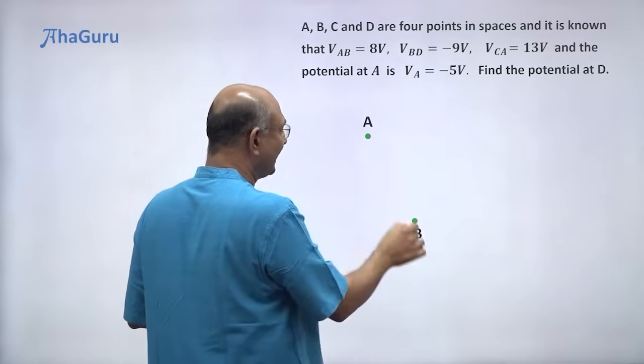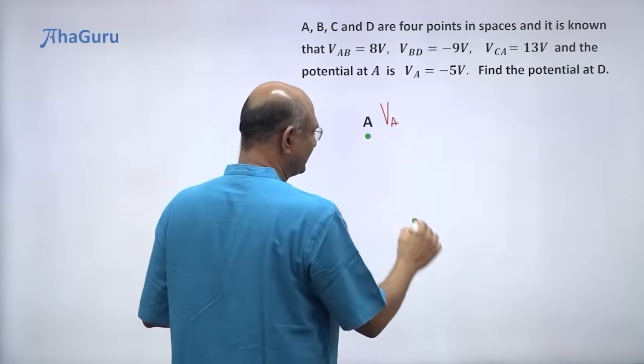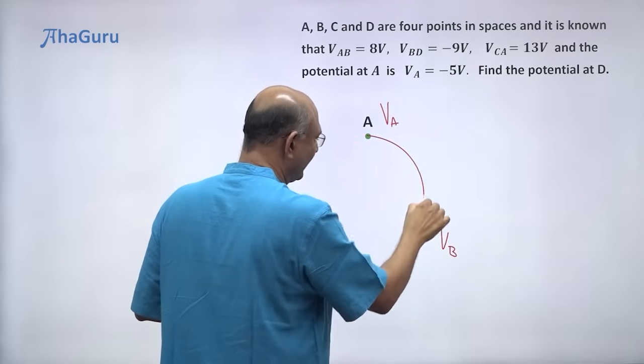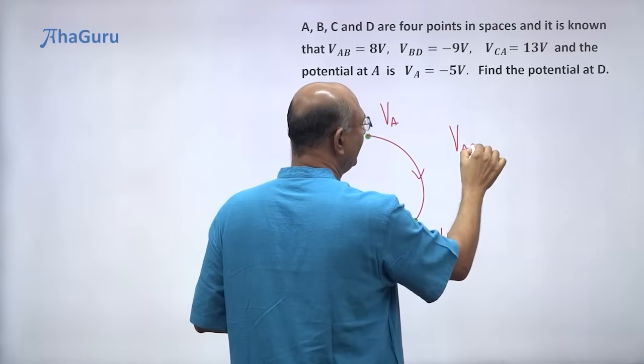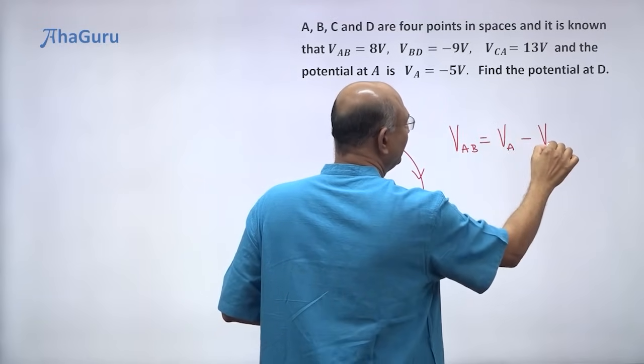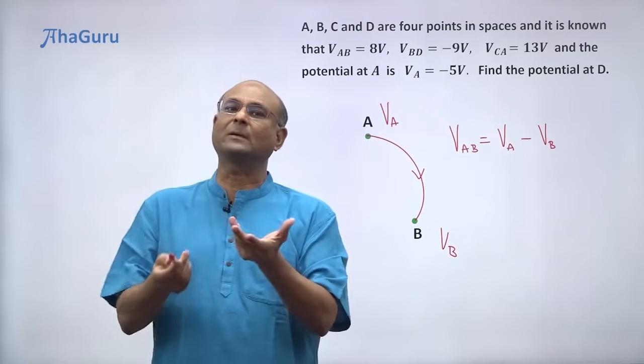Suppose I have two points A and B. The potential here is V_A and the potential there is V_B. We know how to calculate the potential drop from A to B. V_AB we know is V_A minus V_B. Now if V_A and V_B are known, this helps us calculate what is the potential drop.